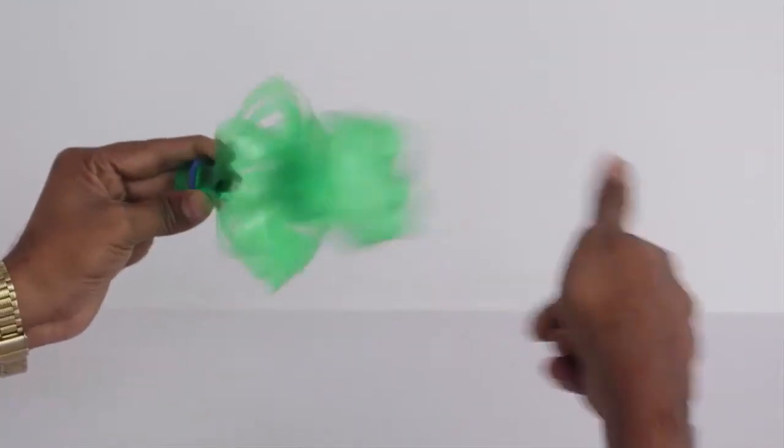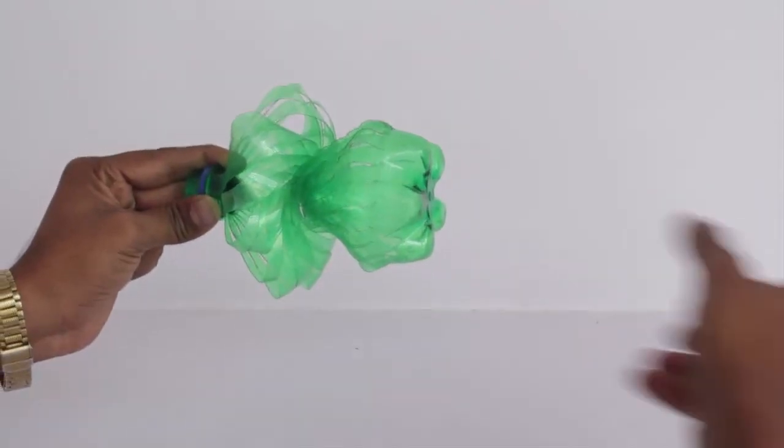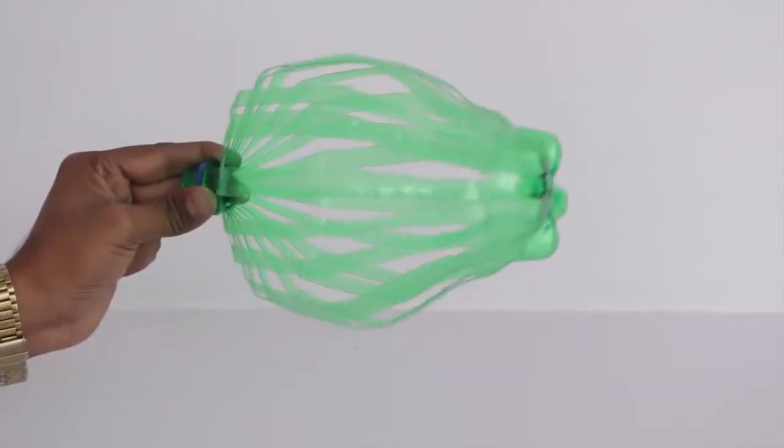Now hold the mouth with one hand and twist the base. The bottle will take an unusual shape with the neck near the top.